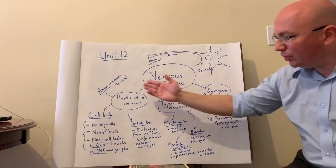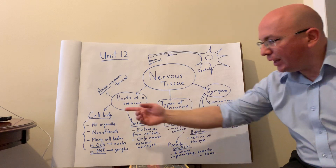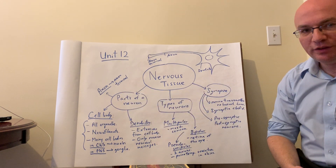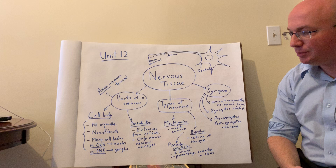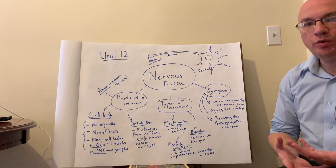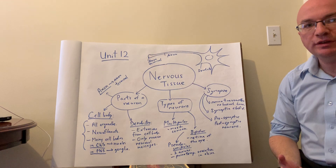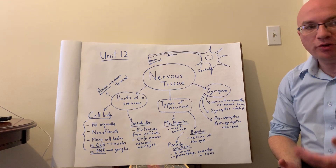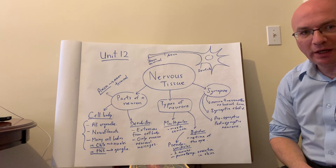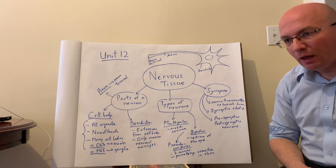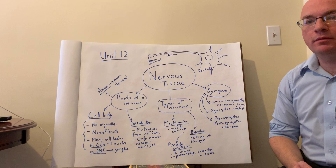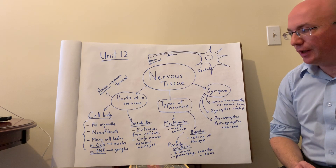For the regular parts of a neuron, we have the cell body, the dendrites, and the axons. In the cell body, all the main regular components of a cell are present, just like in any other cell — the nucleus, all the organelles, mitochondria, and other organelles are all located there.